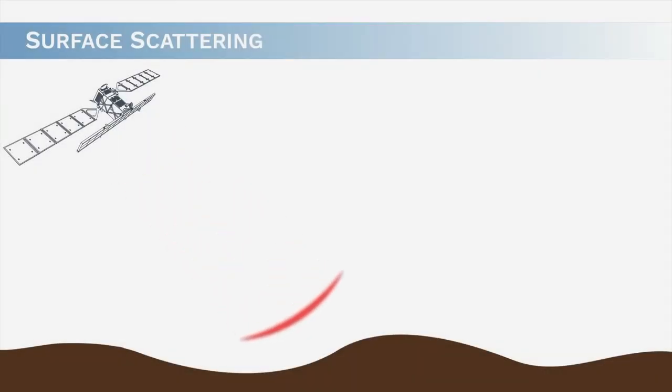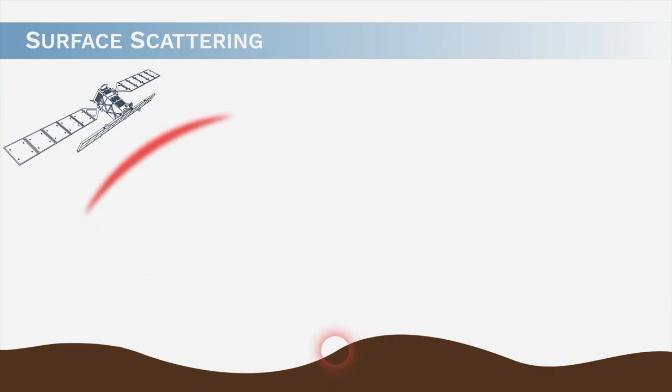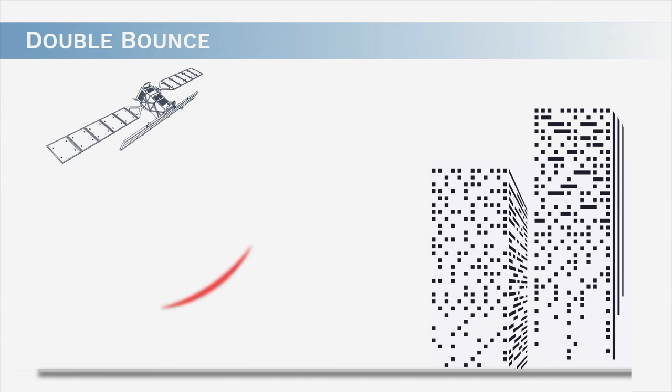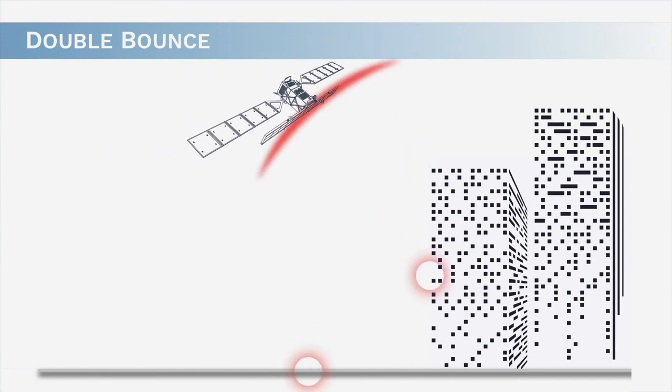One of the ways we can exploit phase difference in a polarimetric system is what's called polarimetric decomposition. The way we do polarimetric decomposition is that we assume there are essentially three different types of target: a direct single scattering, double-bounce scattering where the signal has interacted with two surfaces, or multiple or diffuse scattering.